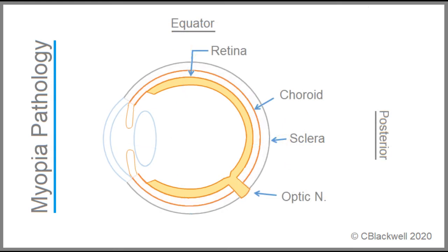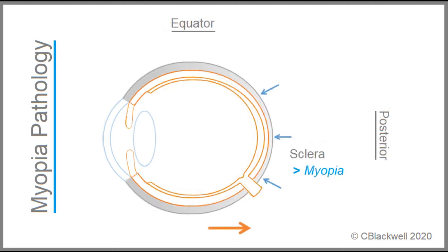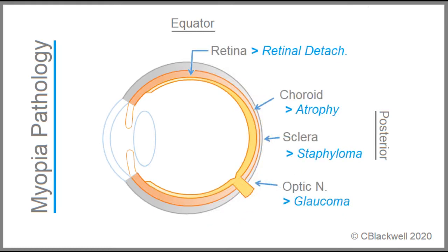The innermost layer is the retina, a layer of nerve tissue that acts like film in a camera. Under that is the choroid, a layer of blood vessels that supplies the outer retina with oxygen and nutrients. The outside is the sclera, a tough fibrous layer that gives the eyeball its structure. Myopia issues all begin with the sclera. The eye of a child destined to become a myope starts out normal, but as it grows the sclera thins, particularly at the back, allowing it to stretch and elongate. In turn, the thinned sclera is associated with thinning of the choroid and retina, and their associated complications.